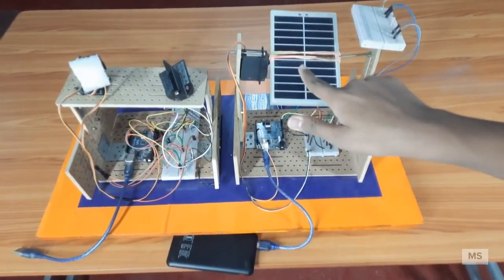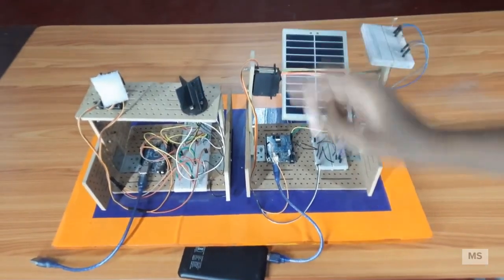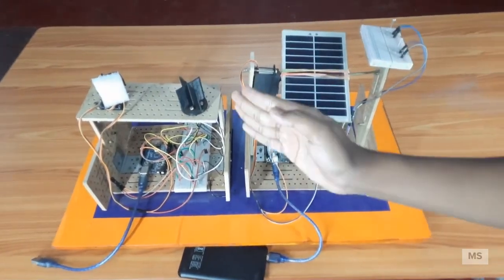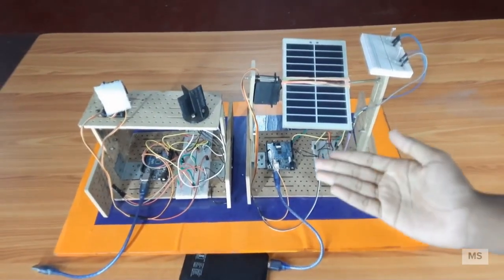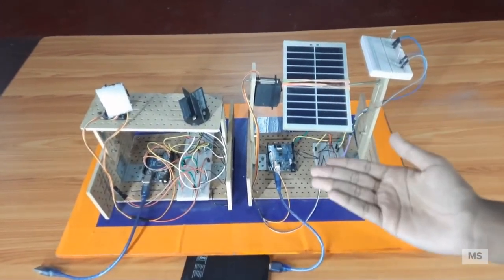and it gives an electrical signal to this servo motor, which is connected with the solar panel over here. And this Arduino tells servo motor where to rotate. And this servo motor rotates the solar panel in that direction. Let's see a quick demo of it's working.